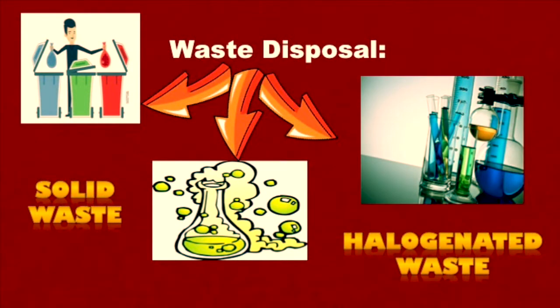For the first part of this experiment, in the preparation of polystyrene, dispose of solid polystyrene and parafilm in the solid waste container. Do not dispose of any solid polymers in a non-halogenated waste container. In the second part of this experiment, in the preparation of Nylon-6-6, rinse the solid nylon with water and blot it dry with a paper towel. Dispose of all nylon waste in the solid waste container. Any remaining aqueous solution should be disposed of in the halogenated waste container.